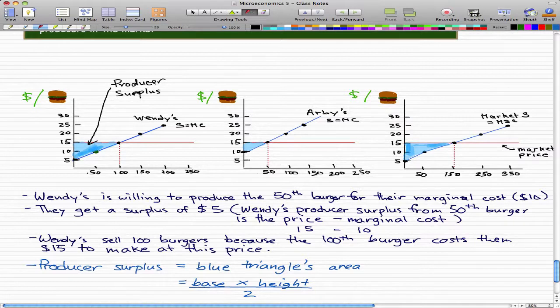the producer surplus for the economy is the area under the market price, which is this red line, and above the market supply curve. This is summed over 150 burgers because we get 50 burgers from Arby's and 100 burgers from Wendy's. So it's summed over 150 burgers sold.